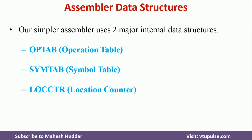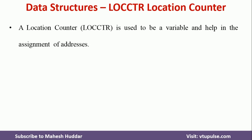Now, coming to the different data structures in system software, there are three main ones: OPTAB (operation table), SYMTAB (symbol table), and LOCCTR (location counter). LOCCTR is used to assign a memory location to each instruction. For every instruction in the assembly language program, we assign a location — initially LOCCTR holds the starting address, for example 1000.